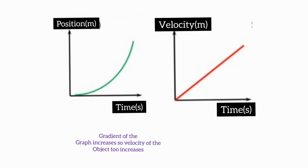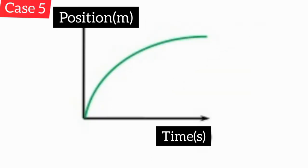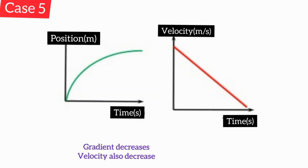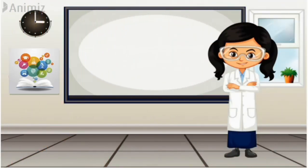Now let's move on to our next curve graph. Here, the gradient of the graph decreases. This decreasing gradient suggests that the velocity of the object also decreases. Therefore, the v-t graph will be as shown in the diagram. We can say the motion starts with a velocity and uniformly decelerates, coming to rest. These are the main five cases of the graph. Let's learn some questions in the next session. Thank you, everyone!